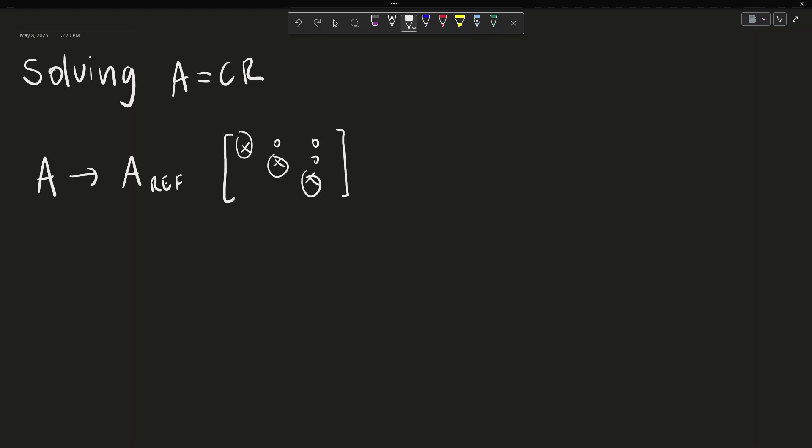Each of these columns with the corresponding pivot will be used to form the matrix C. So C is a matrix of columns where each column is from the original matrix A, not the row echelon or reduced row echelon form A, but the original matrix A, where the pivots exist in the row echelon form.